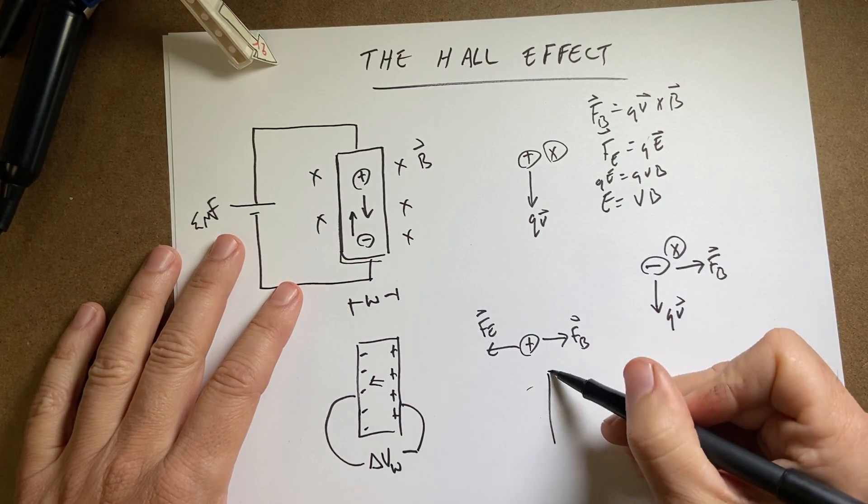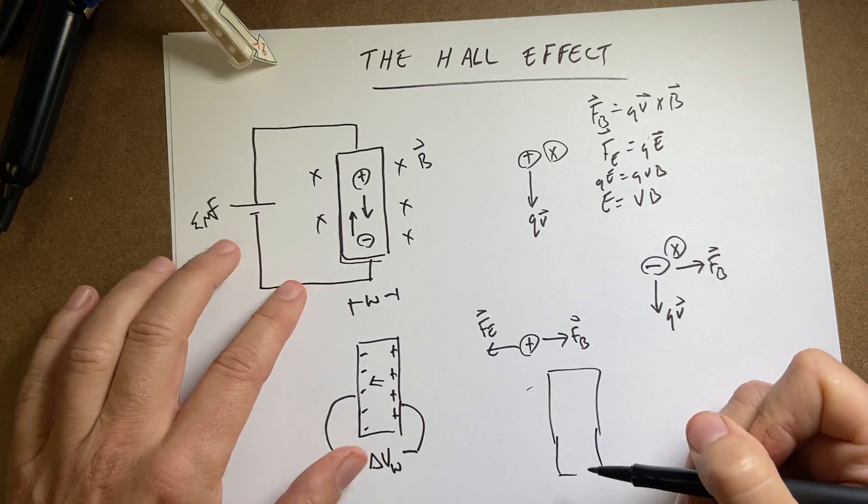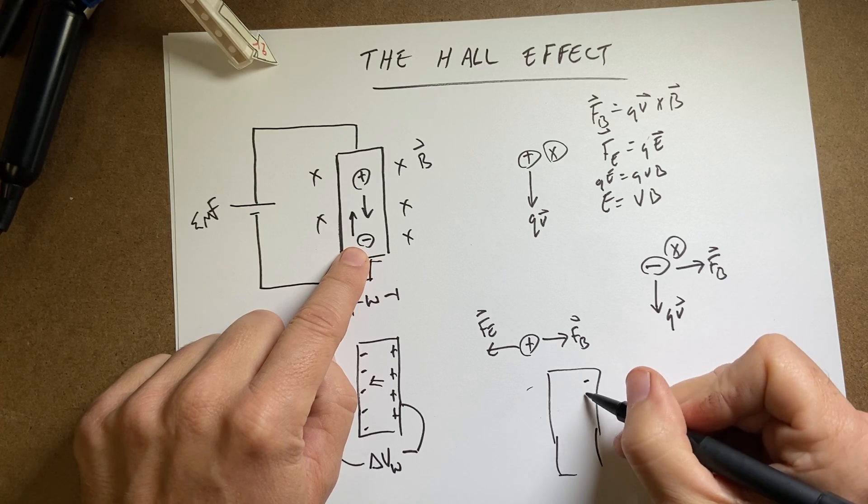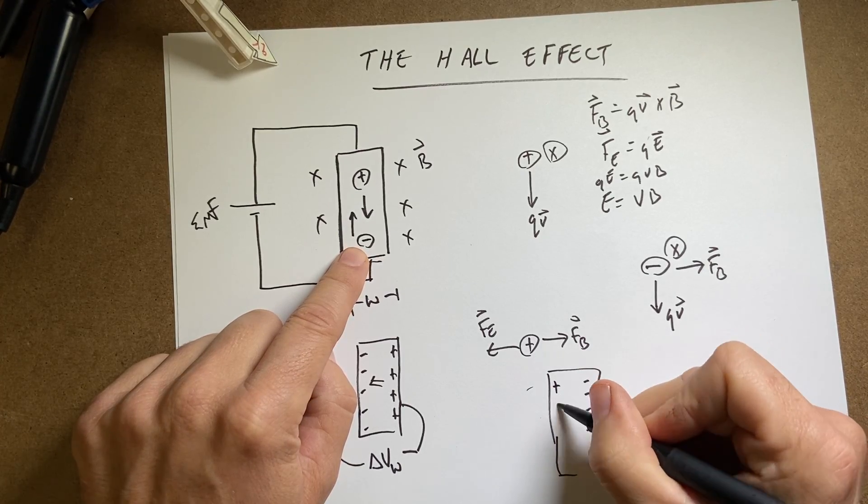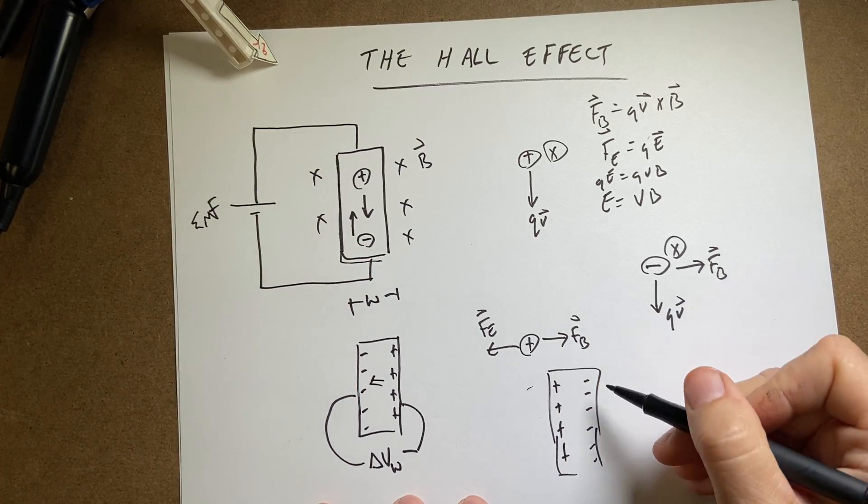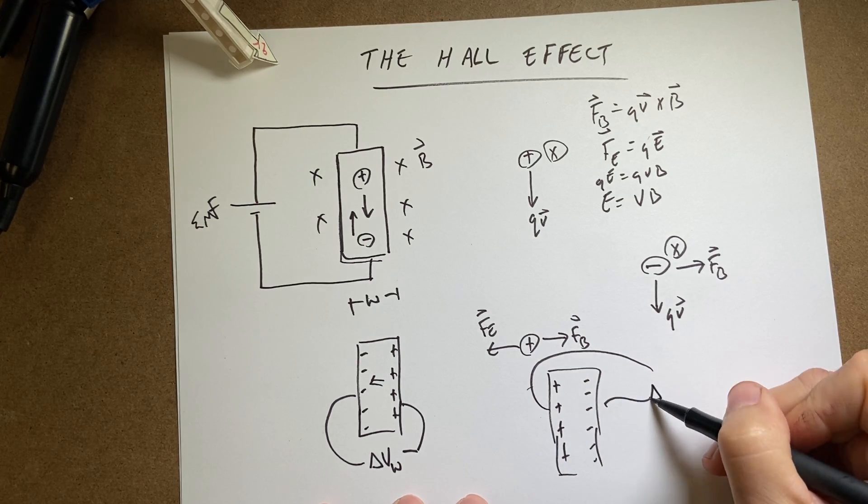So now in this case, I'm going to get the magnetic force is to the right, I'm going to get negative charges on the right and positive charges on the left. And I would get a different delta V.